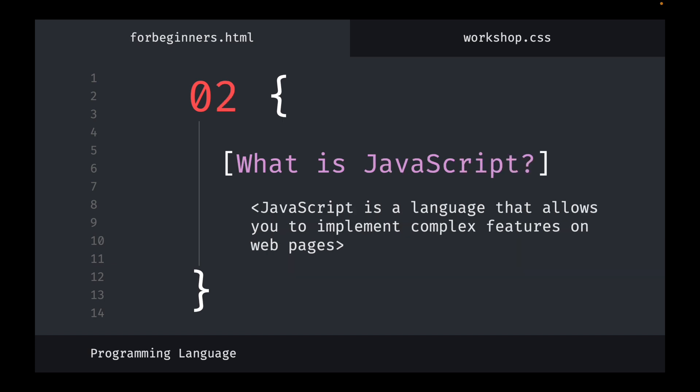JavaScript is a language that allows you to implement complex features on web pages. For example, when you click on a button on a website and some functionality happens behind the scenes, that is JavaScript's work. Not only buttons — images, videos, text boxes, and content that continuously reloads on a page are also driven by JavaScript.